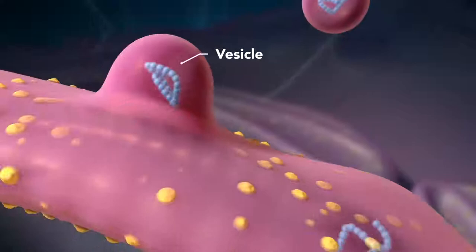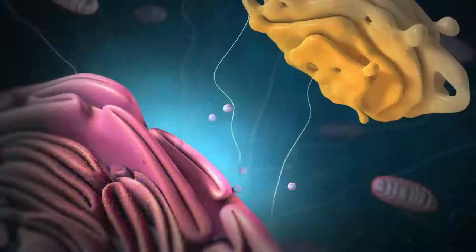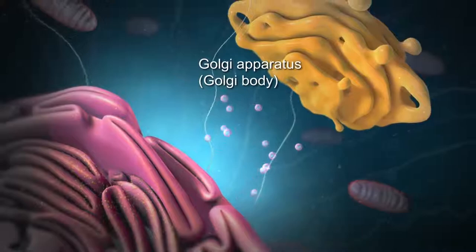Proteins and other materials emerge from the endoplasmic reticulum in small vesicles, where the Golgi apparatus, sometimes called the Golgi body, receives them.